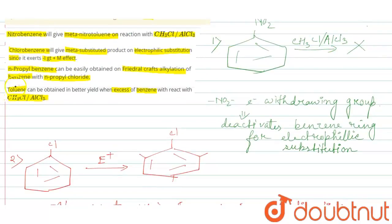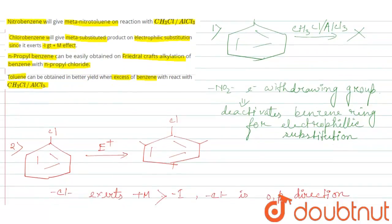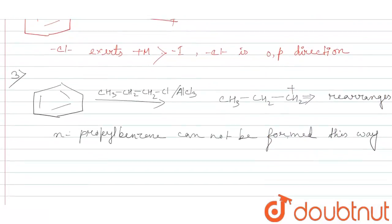Now if we come to statement four, it says toluene can be obtained in better yield when excess of benzene reacts with CH3Cl, that is methyl chloride and AlCl3.